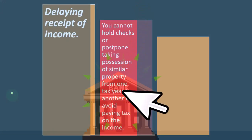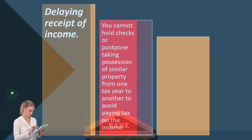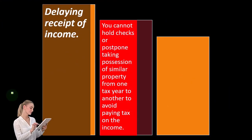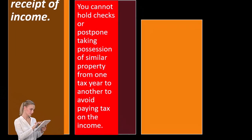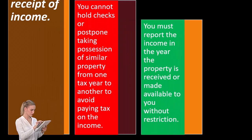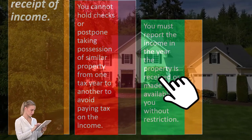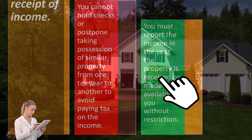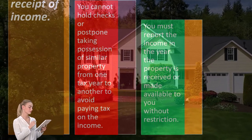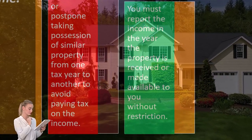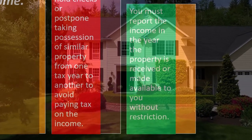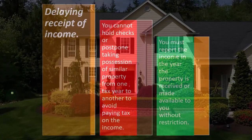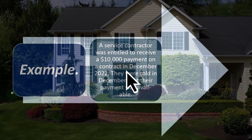Delaying receipt of income. You cannot hold checks or postpone taking possession of similar property from one tax year to another to avoid paying tax on the income. You must report the income in the year the property is received or made available to you without restriction. So if you had access to it, that means it's income — even though you say you may have access but you're not going to touch it for a while. Nothing's stopping you from touching it, therefore it's yours. It's your income.